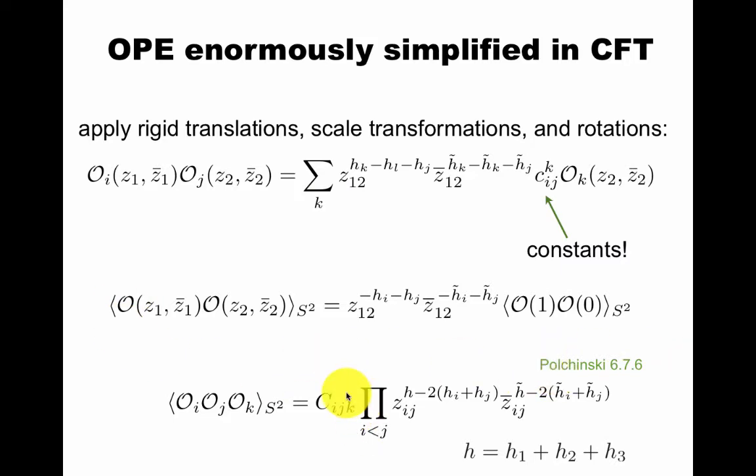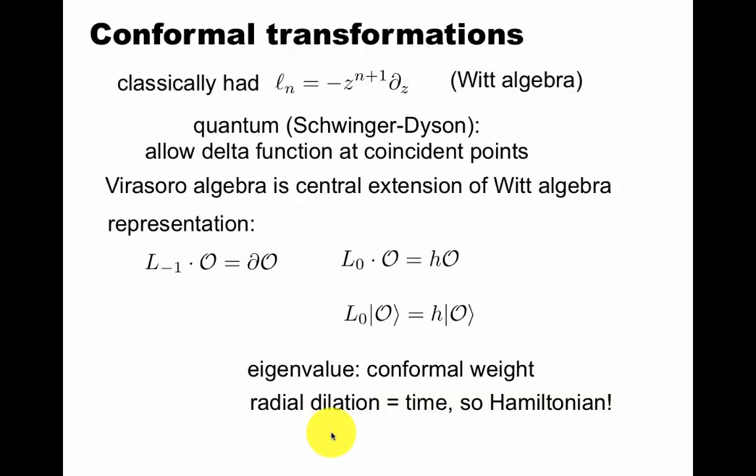Similar to the three-point function, it's determined in terms of one constant, h, there are the weights of these operators, and some normalization. Classically, we had the Witt algebra. We said quantum we allow delta coincident points, and the Virasoro algebra is the central extension of the Witt algebra. Now we can do representations of the Virasoro algebra.